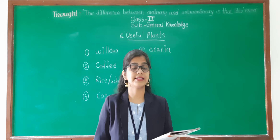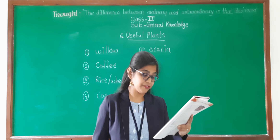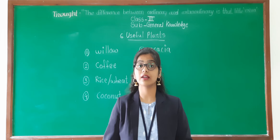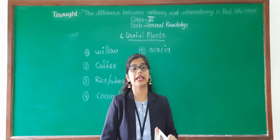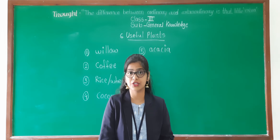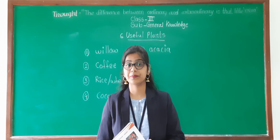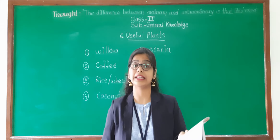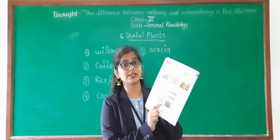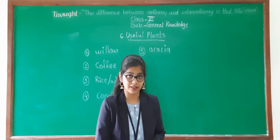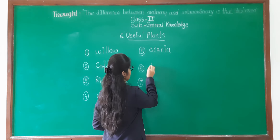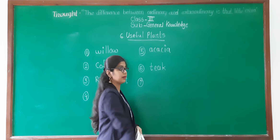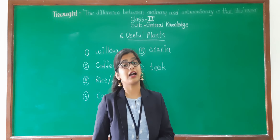Next one is number six: you use me for making furniture — the furniture which we are using at our home. From which plant can we get it? In Marathi, we say sagwaan, but in English, see the help box — it is teak. Write down here: T-E-A-K. Teak. In Marathi, we say it as sagwaan.